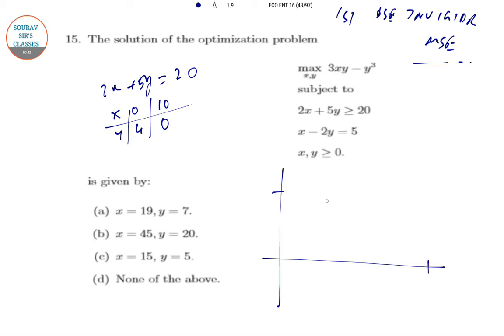So 0 comma 4 is here, 10 comma 0 is here. So the first line will look like this. Second line is x minus 2y equal to 5. So here if we put x equal to 0, y equals minus 5 by 2. And if you put y equal to 0, x equals 5.